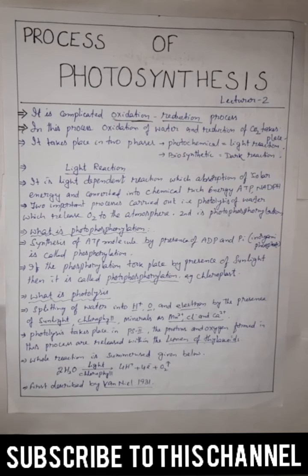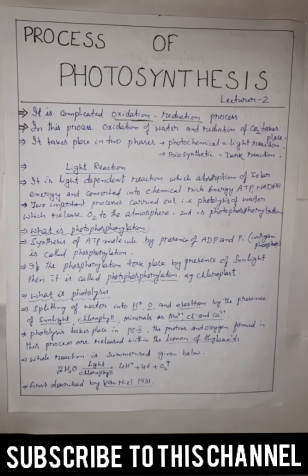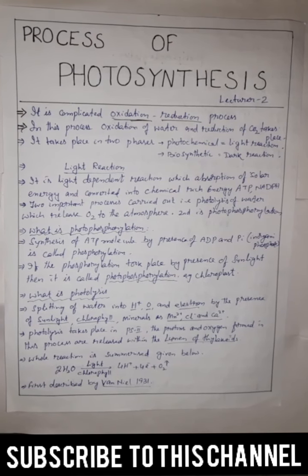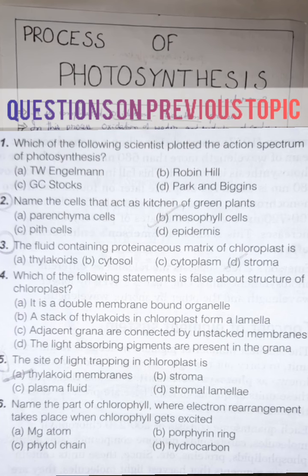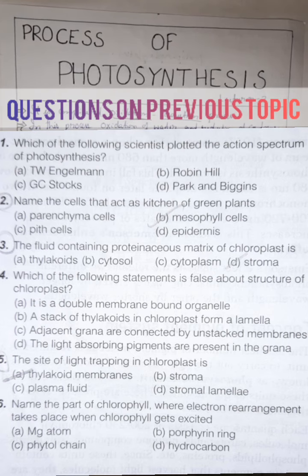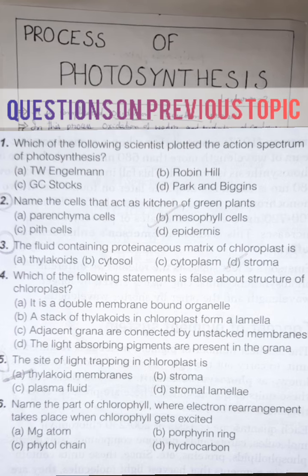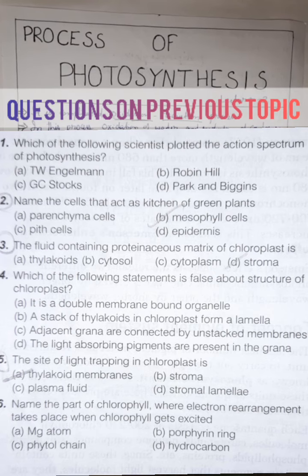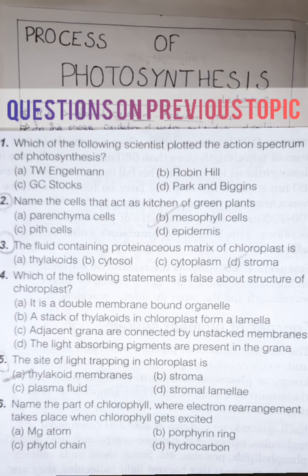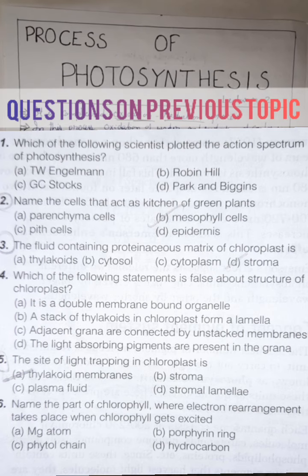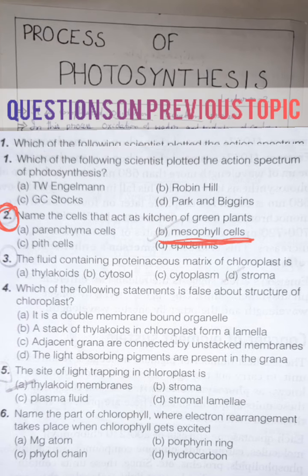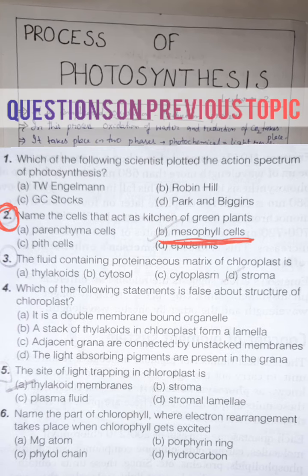I will ask some questions and we will try to give the answers. First question: Name the cell that acts as the kitchen of green plants. Option A: parenchyma cells. Option B: mesophyll cells. Option C: pit cells. Option D: epidermis. Answer is mesophyll cells.